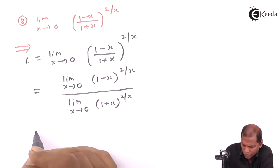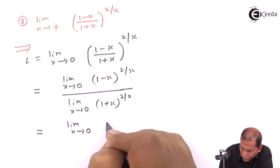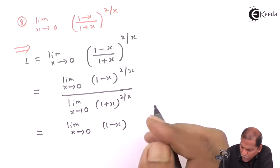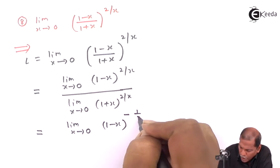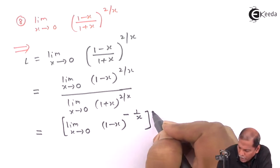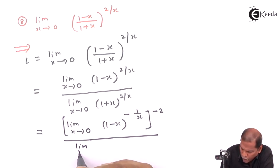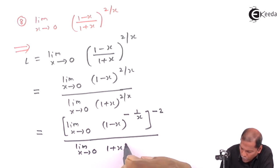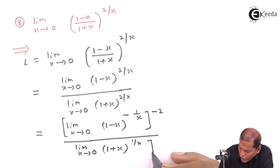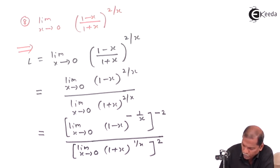The next step: this equals limit x tends to 0, of 1 minus x raised minus 1 upon x, with the square bracket complete, and outside we write minus 2. The whole thing is divided by limit x tends to 0, 1 plus x raised 1 by x, with 2 written outside the bracket. In this way we adjust the numerator and denominator of the problem.